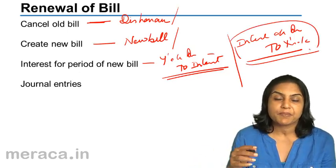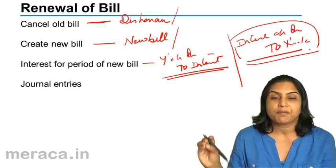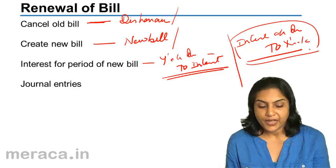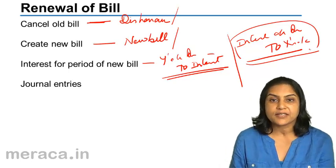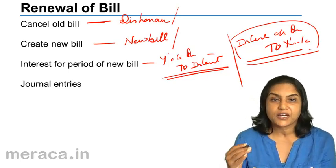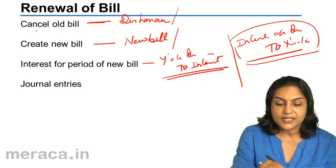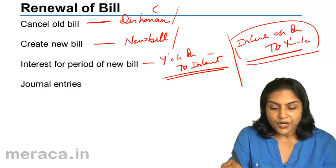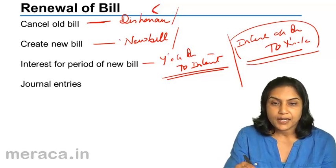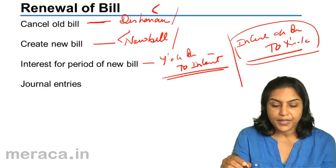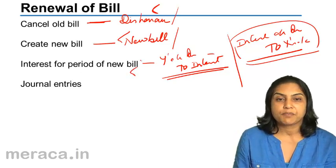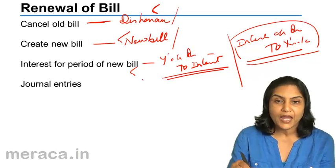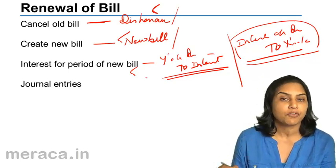This interest may be settled in cash or it may form a part of the new bill. Therefore, the journal entries that we need to pass whenever there is a renewal of bill are: cancel the old bill (dishonor of the old bill), creation of the new bill, and interest for the period. The amount of the new bill may or may not be inclusive of the interest.